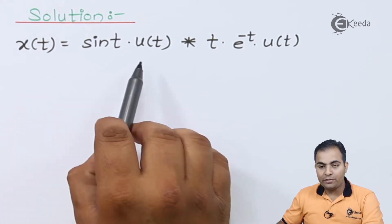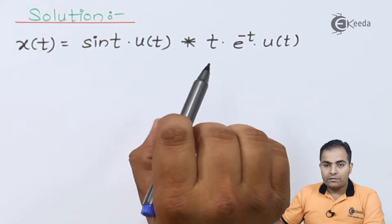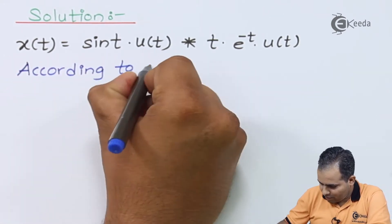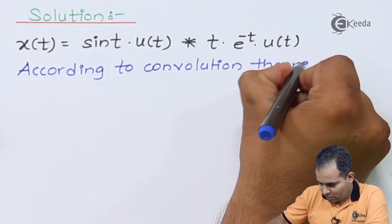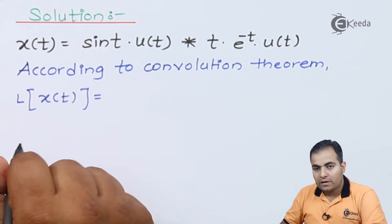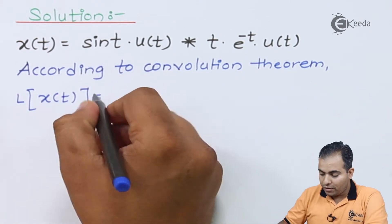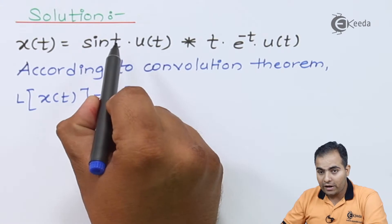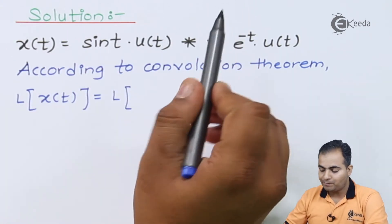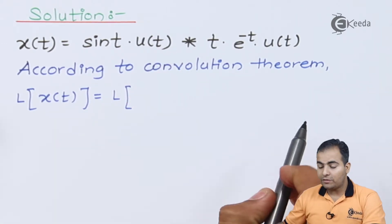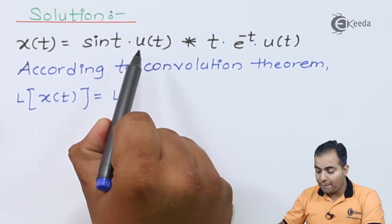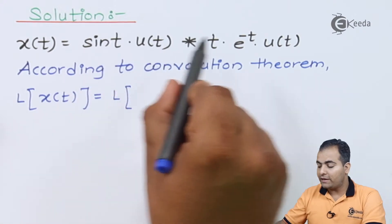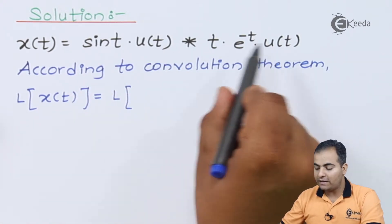x(t) is sin(t)·u(t) convolved with t·e^(-t)·u(t). According to the convolution theorem of Laplace transform, the Laplace transform of x(t) is the product of the Laplace transforms of both functions, found separately. That means find the Laplace transform of sin(t)·u(t) separately, and the Laplace transform of t·e^(-t)·u(t) separately, then multiply them with each other.